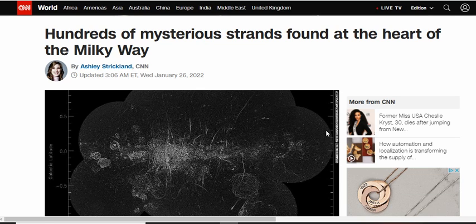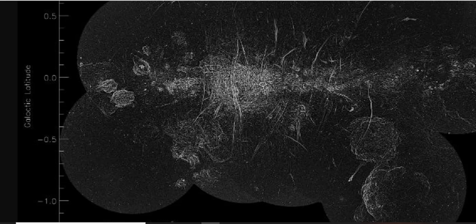Hundreds of mysterious strands found at the heart of the Milky Way. The center of our Milky Way galaxy is home to a multitude of intriguing figures, including nearly a thousand mysterious magnetic strands, according to a new telescope image.